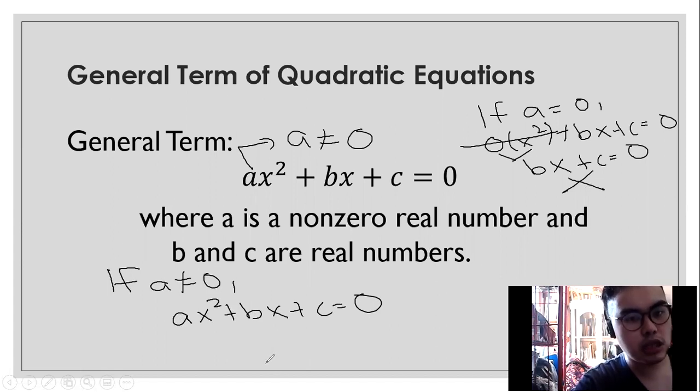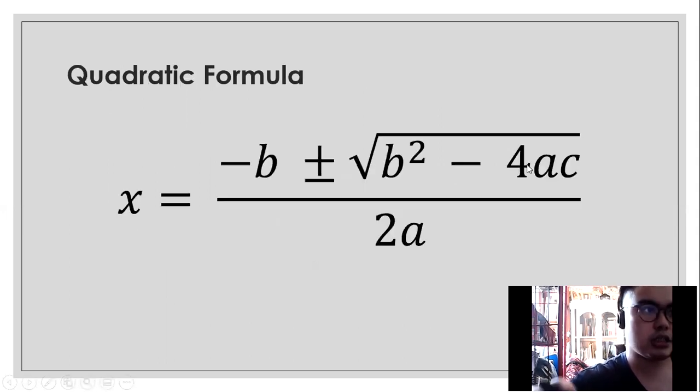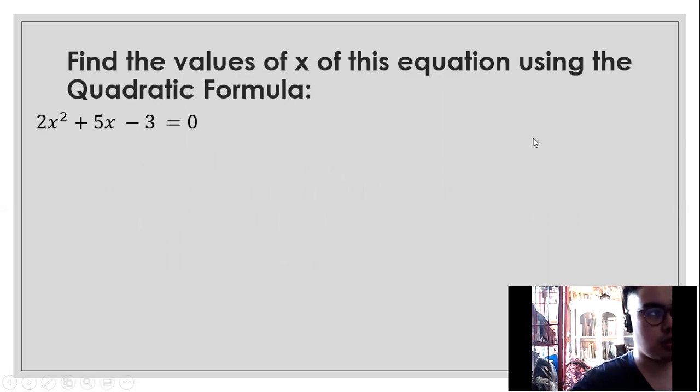When we say quadratic equation, the highest degree is two. As you see, the exponent of two. So let me discuss the formula of the quadratic equations to solve for x. Here's a quadratic formula. We read it as x is equal to negative b plus minus square root of b squared minus 4ac over 2a. So yung 2a mo lang ang denominator mo. Now we're going to use this formula to solve for the values of x for this equation.